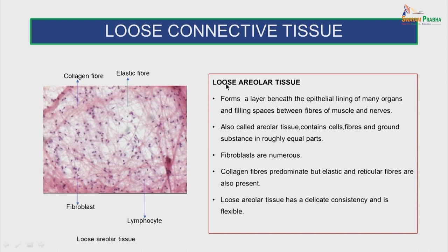The loose connective tissue, also called areolar tissue, forms a layer beneath the epithelial lining of many organs and fills spaces between fibers of muscle and nerves. It contains cells, fibers and ground substance in roughly equal parts. The fibroblasts are numerous. The collagen fibers predominate but elastic and reticular fibers are also present. Loose areolar tissue has a delicate consistency and is flexible. This slide shows the loose areolar tissue with the collagen fibers, elastic fibers, fibroblasts and lymphocytes.